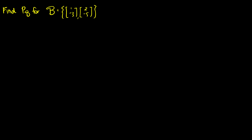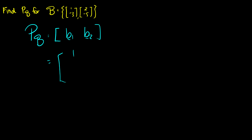Let's find the change of coordinates matrix for a given basis. The definition is just the matrix containing b1 through bn as columns. With b1 = (1, 2) and b2 = (-3, -5), the change of coordinates matrix P_b is [[1, -3], [2, -5]]. We could also switch the order of b1 and b2, but specifically b1 comes first and b2 second.